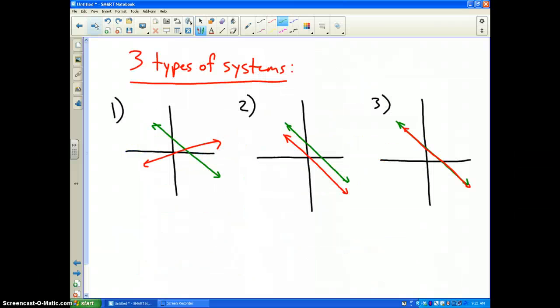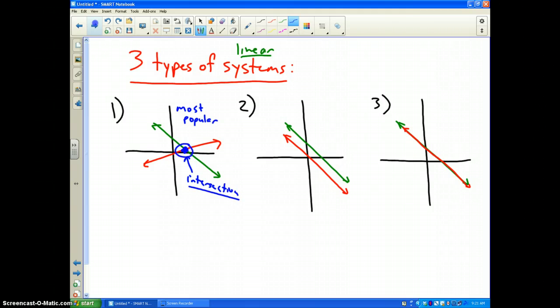When you have a system that is linear, there are three types of linear systems. The first system would be the one where your two lines intersect. This is by far the most popular situation. The whole key to the problem is the intersection point. You must find that point because that is the answer to the problem. This particular situation will always have only one solution. It is what we call consistent and independent.